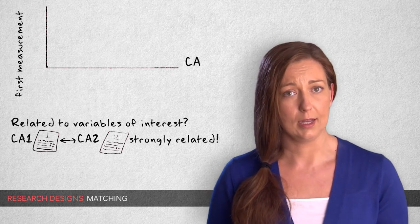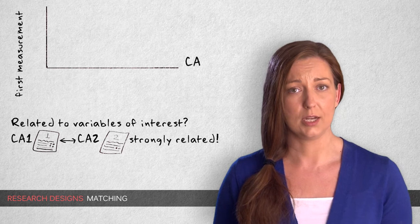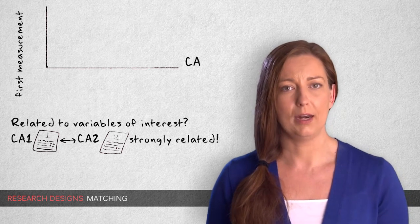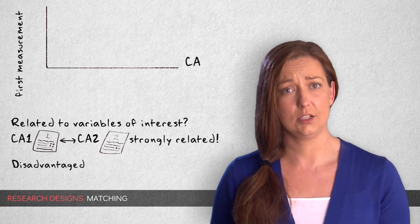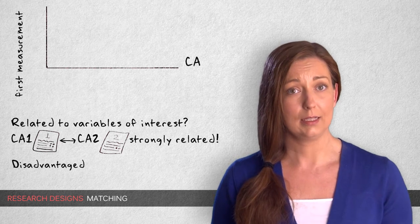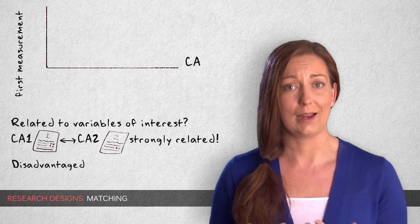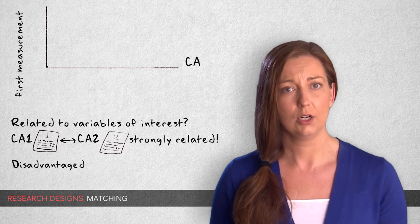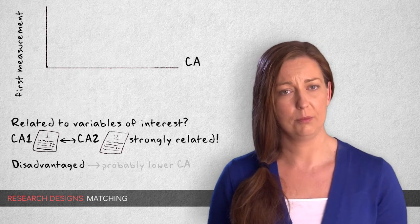It's also highly likely that our matching variable, cognitive ability, the pretest, is related to the independent variable, advantaged versus disadvantaged background. It's likely that in real life, children who lack stimulation and security, whether through nature or nurture, already have lower cognitive abilities.